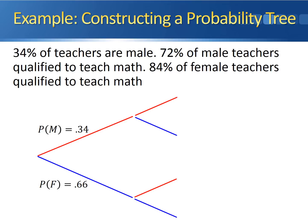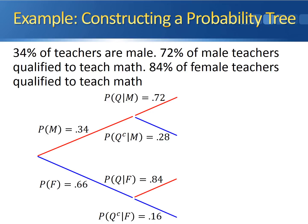The probability of being qualified given that the person is male is 0.72, as given in the problem. Since this is 0.72, the probability that a person is not qualified given that the person is male has to be 0.28 — these two conditional probabilities add up to 1. Moving down to the bottom set of branches: the probability of a person being qualified given that they're female is 0.84, which means the probability that a person is not qualified given that they're female is 0.16. That set of conditional probabilities also adds up to 1.